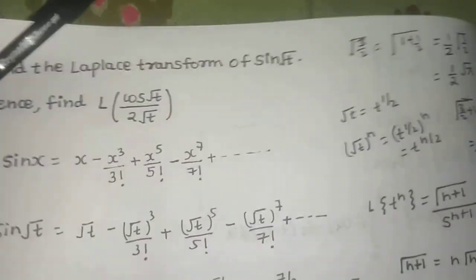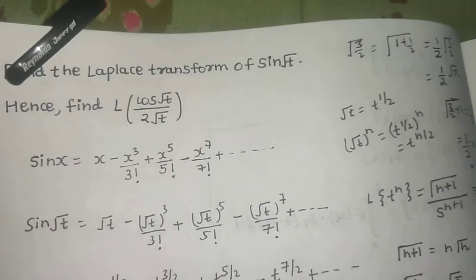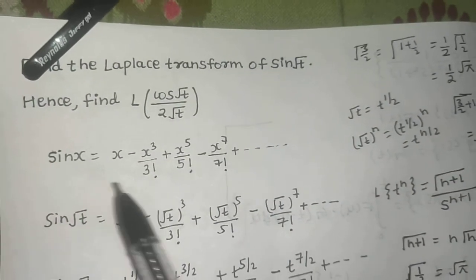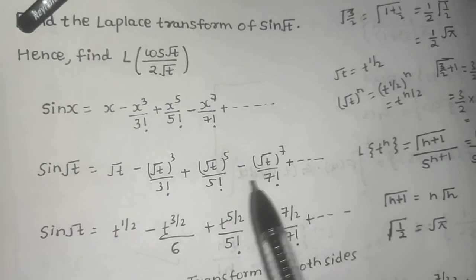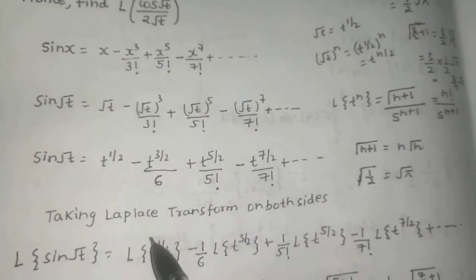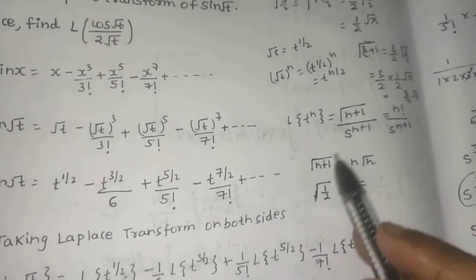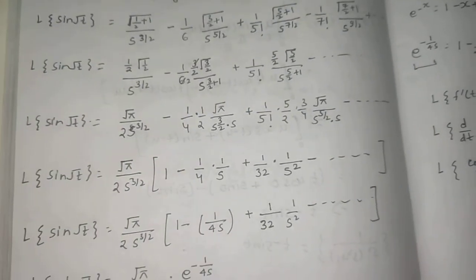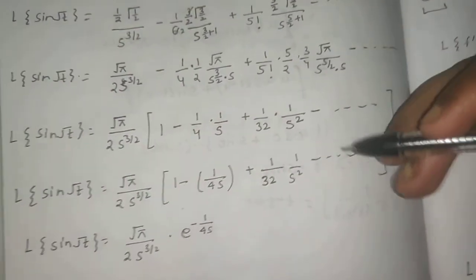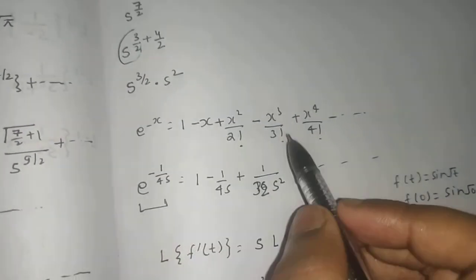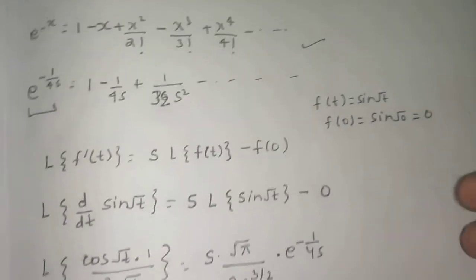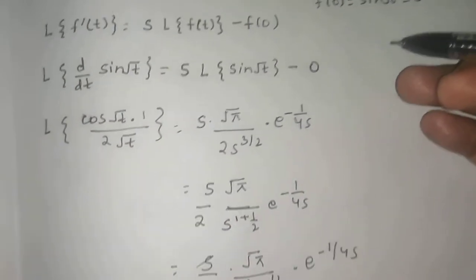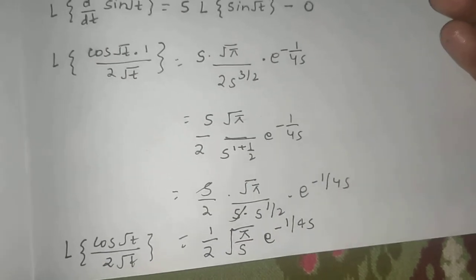This was a lengthy but straightforward question. The key steps were: expand sin(x) via Maclaurin series, substitute √t, apply Laplace of t^n using gamma functions, simplify using gamma properties, recognize the e^(−x) expansion, then use the Laplace derivative property for the second part. I hope you liked the video — thanks and have a nice day.